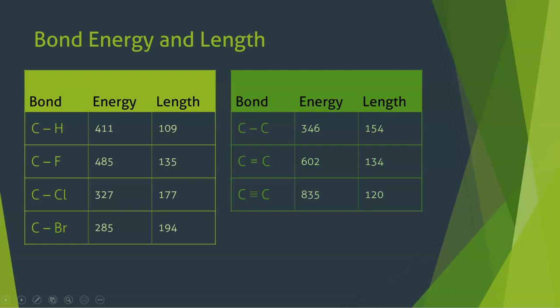Covalent bonds, like we just said, don't always have to be single bonds. We can have double bonds and triple bonds. And in those cases where you've got the same atoms on either end but you're looking at a single, a double, and a triple bond, the energy is going to increase significantly as you add these bonds, and the length is going to decrease.